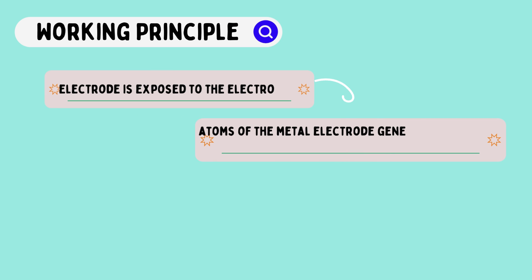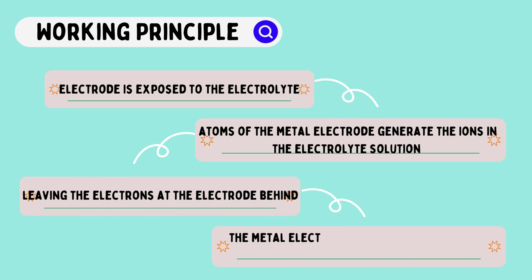Initially, when an electrode is exposed to the electrolyte at the electrode-electrolyte interface, the atoms of the metal electrode tend to generate the ions in the electrolyte solution, leaving the electrons at the electrode behind. As a result, the metal electrode will become negatively charged.